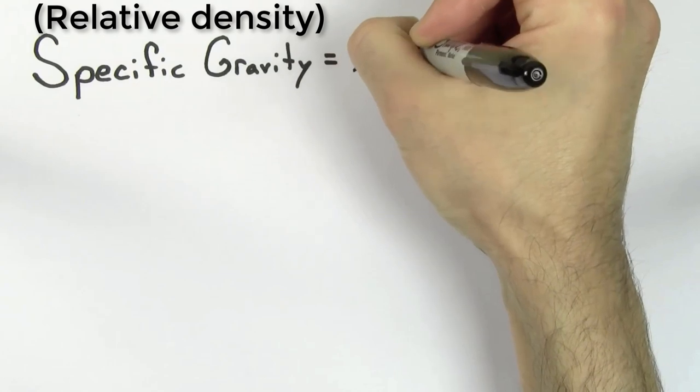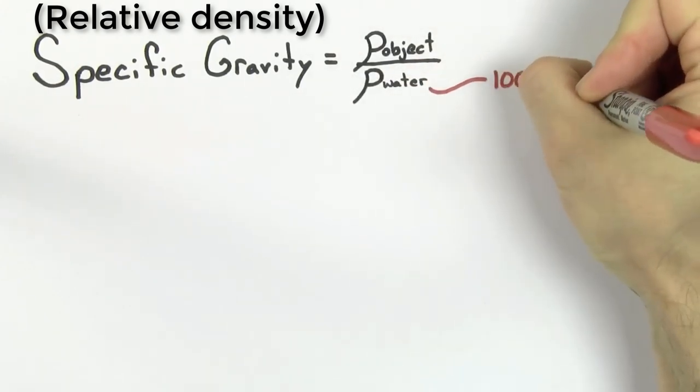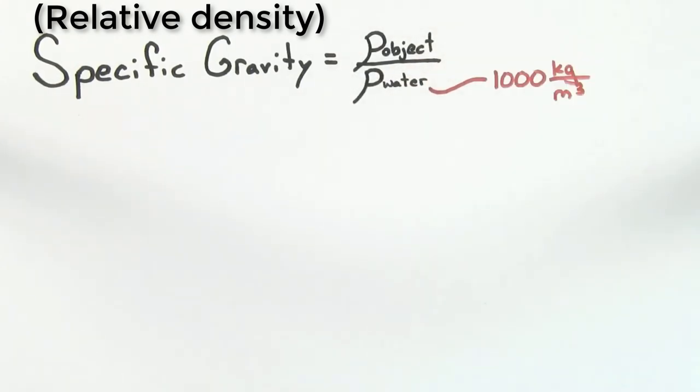The specific gravity of an object is the density of that object divided by the density of water. The density of water is 1,000 kilograms per meter cubed.